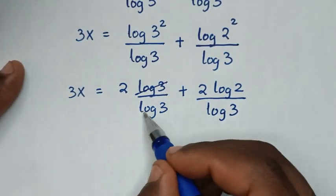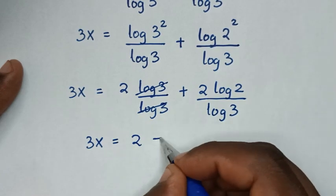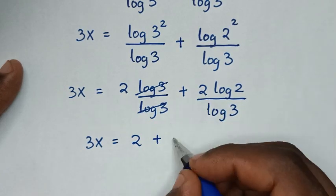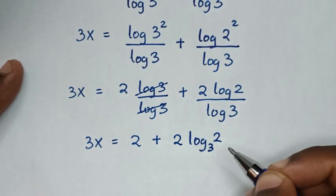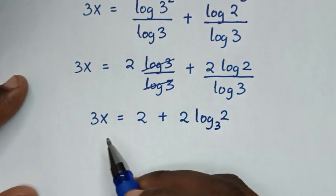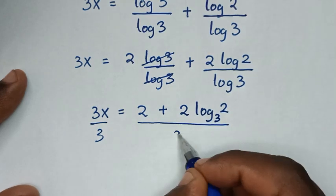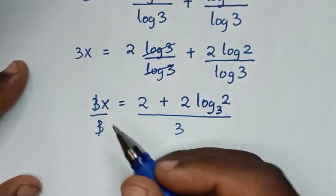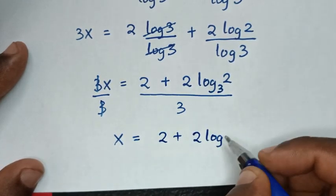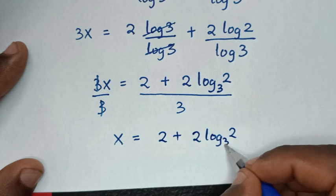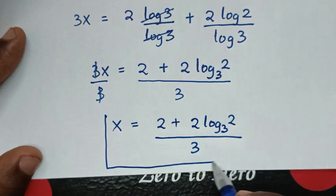The log of 3 cancels with log of 3, so 3x is equal to 2 plus 2 log of 2 over log of 3, which is the same as 2 plus 2 log base 3 of 2. Then dividing both sides by 3, x is equal to 2 plus 2 log base 3 of 2, all over 3. This is our final answer.